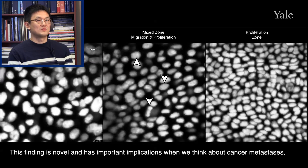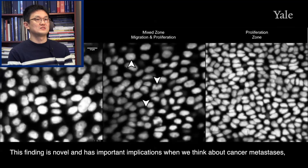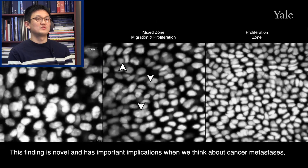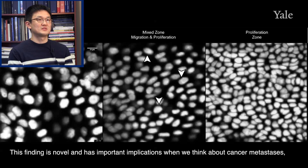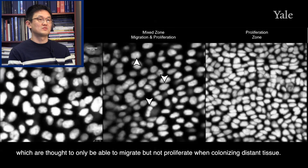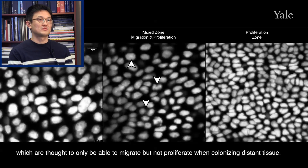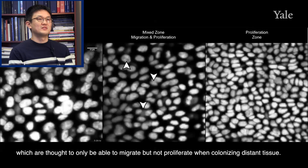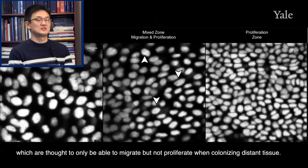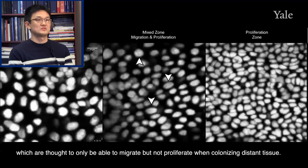This finding is novel and also has important implications when we think about cancer metastasis. Cancer cells are thought to only be able to migrate but not proliferate while colonizing distant tissue.